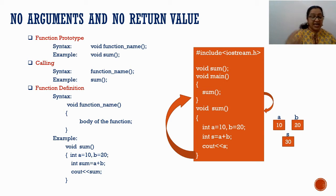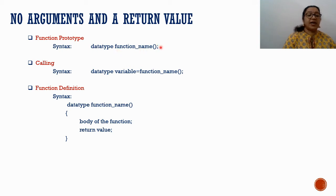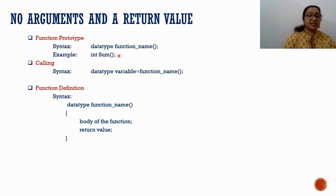Now the second category: no arguments and a return value. Here we are not passing any value but we are returning a value to the calling place. For the function prototype syntax: first specify the data type of the return value, then the function name, then empty bracket, then semicolon. For example: int sum(); — this means from the sum function we are returning an integer value, that's why the return type is int.